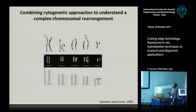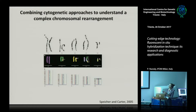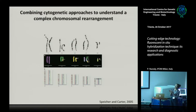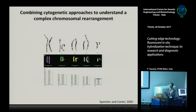Fluorescence in situ hybridization can also be used to understand complex chromosomal rearrangements. Using chromosome painting probes that mark full chromosomes, you can see, for example, that chromosome 5 has a region of chromosome 14, chromosome 6 has a region of chromosome 8, and chromosome 8 has multiple regions from chromosomes 5, 6, and 2. Thanks to in situ hybridization, we can understand how these rearranged chromosomes are built.